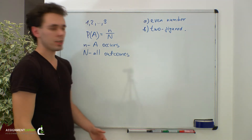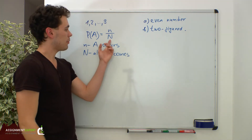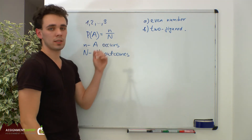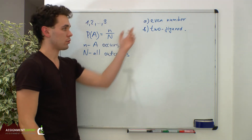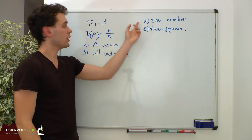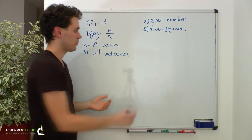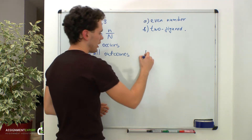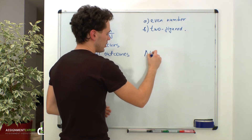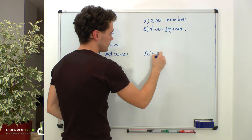In our case, capital N is equal to 9 for both cases, because we have 9 cards and we can pick any of them. So capital N equals 9.